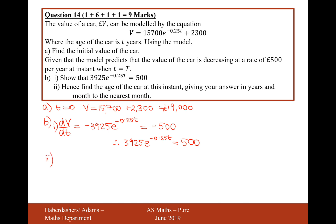Then part ii is going to be hence find the age of the car at this instance, giving your answer to years and months. So let's take the 500 and divide it by 3,925. So 500 divided by 3925, that would give us 20 over 157. Then how do you get rid of the e? Well, you get rid of the e by ln-ing both sides. So it's going to be minus 0.25 t equals ln 20 over 157. Then we'll times by minus 4.